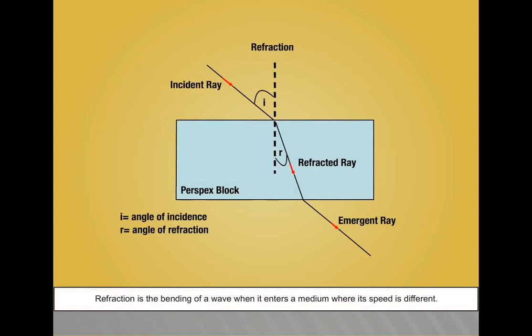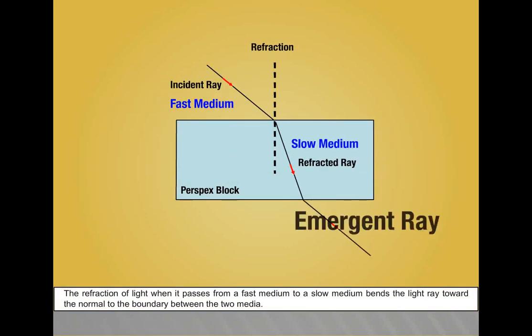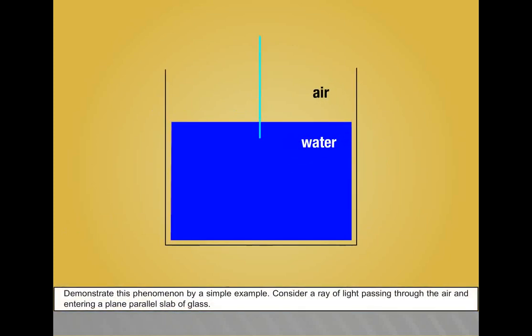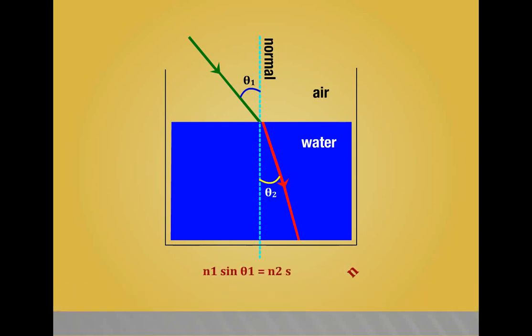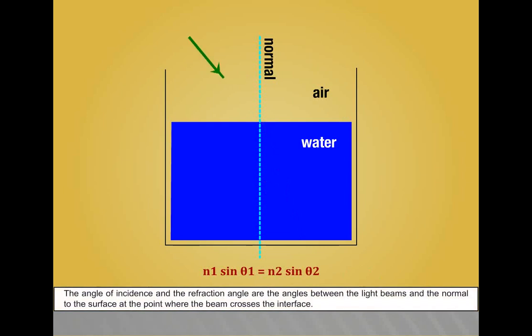Refraction is the bending of a wave when it enters a medium where its speed is different. The refraction of light when it passes from a fast medium to a slow medium bends the light ray toward the normal to the boundary between the two media. Demonstrate this phenomenon by a simple example: Consider a ray of light passing through air and entering a plain parallel slab of glass. The relation between the angle of incidence θ1, the angle of refraction θ2, the refraction index of the glass slab N2, and the surrounding medium N1 is: N1 sin θ1 = N2 sin θ2. The angle of incidence and the refraction angle are the angles between the light beams and normal to the surface at the point where the beam crosses the interface.